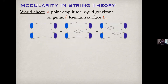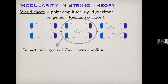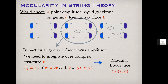Let me start with the first example to set up the ideas. When we compute, say, four-graviton amplitudes, we want to do a sum over all genera — all Riemann surfaces with a fixed genus: zero, one, two, and so on. Focusing on the genus one case, the torus amplitude, we integrate over the complex structure tau. However, two different taus related by tau prime equals gamma tau, with gamma an SL(2,Z) matrix, produce the same torus, leading to modular invariance.